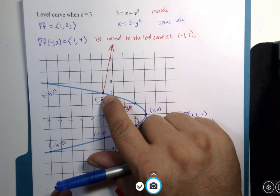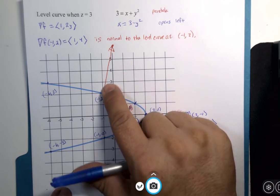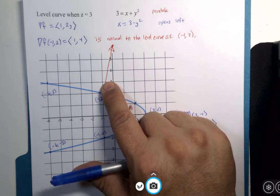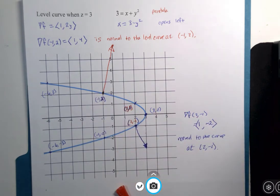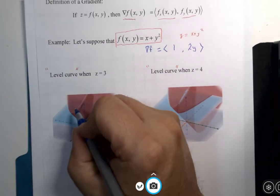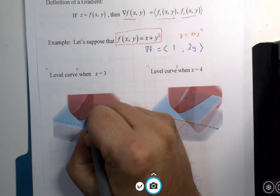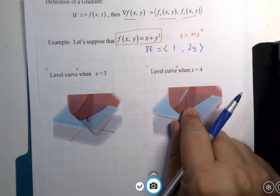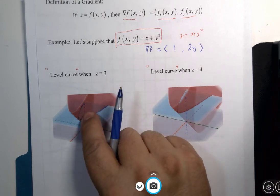So this direction happens to be the most direct route to the next level curve, or it's the steepest part of the 3D surface. So if I were to go back to my 3D surfaces and I was to find that normal vector, that's pointing the closest way to get to the next level on the graph, that would be one unit higher.